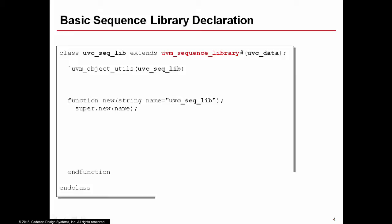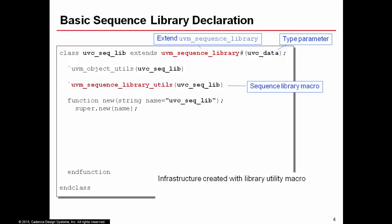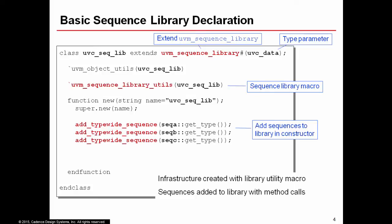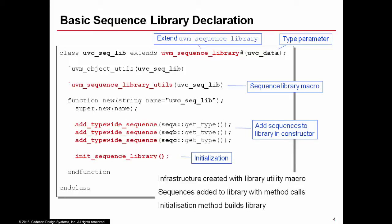For the basic declaration, the sequence library — ubc_seq_lib — extends from the UVM subclass uvm_sequence_library and must have a type parameter: the name of the type of the data items generated by sequences in the library, here ubc_data. A library has an object utilities macro and a constructor with a single name argument, but must also have its own utility macro uvm_sequence_library_utils, which creates essential infrastructure. In the constructor, you add UVC sequences using add_typewide_sequence calls — SeqA, SeqB, SeqC — and call init_sequence_library to set up the library. Note: a library does not have a task body and cannot define its own sequences.